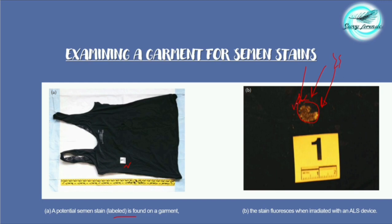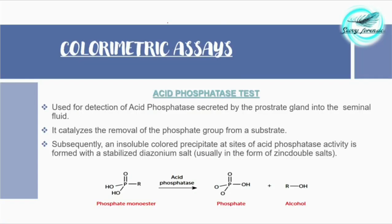Next are the colorimetric assays. As the name suggests, the results will be specific colors indicating that a semen stain could be present. The first and most common test is the acid phosphatase test. We have discussed the acid phosphatase enzyme present in semen in the previous video — understanding that basic concept is important before proceeding.